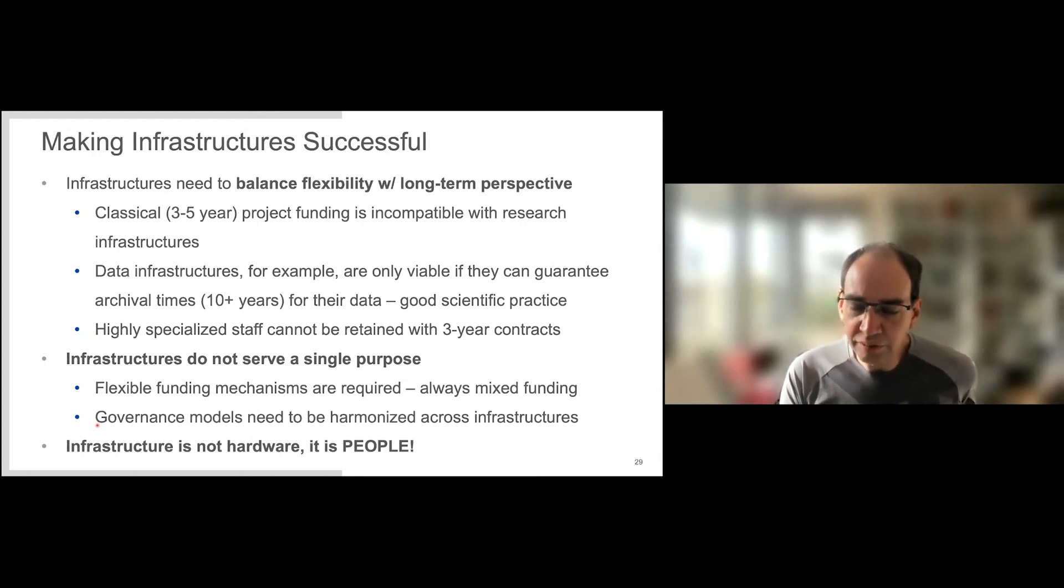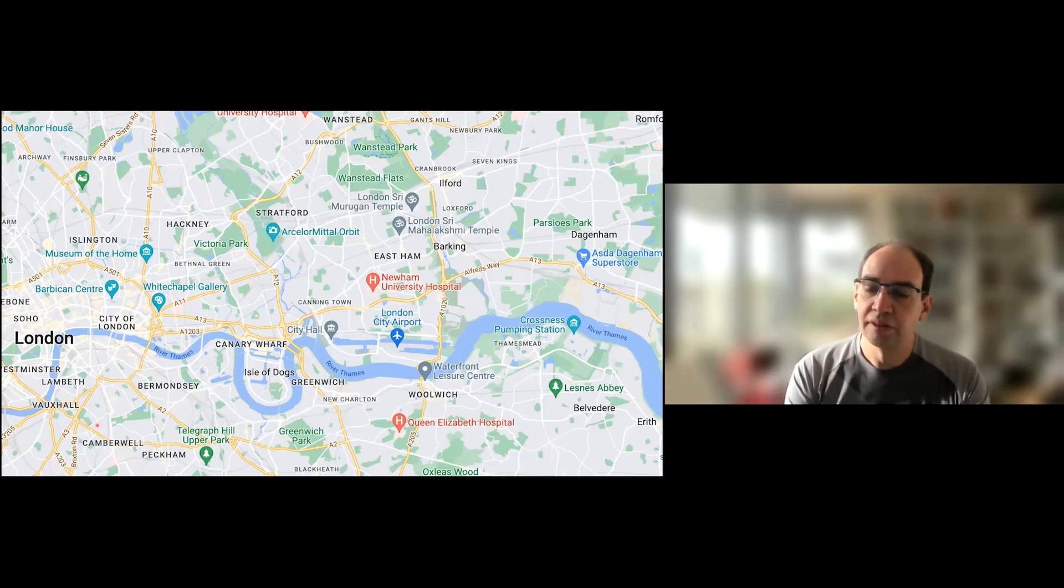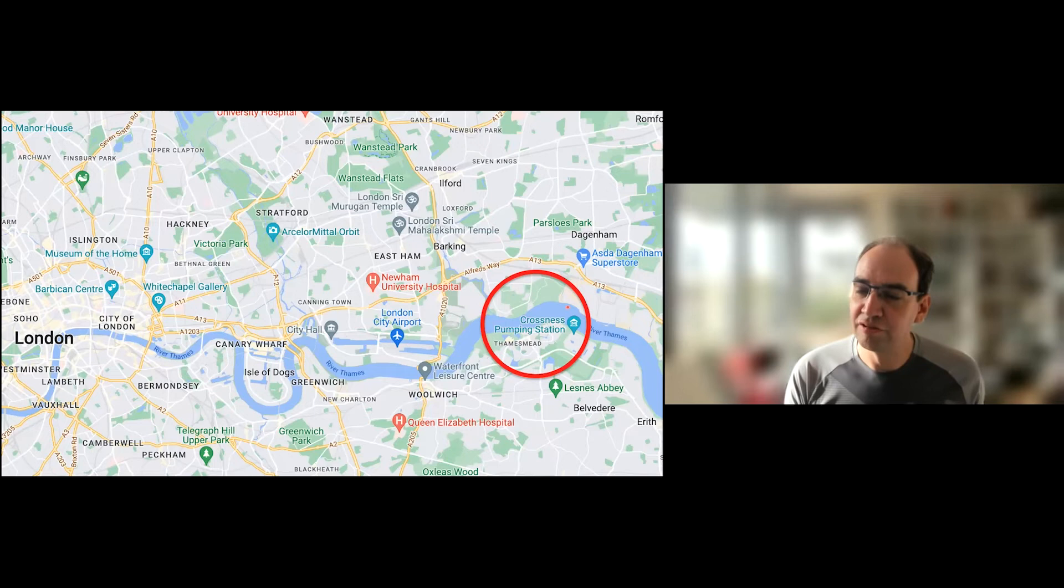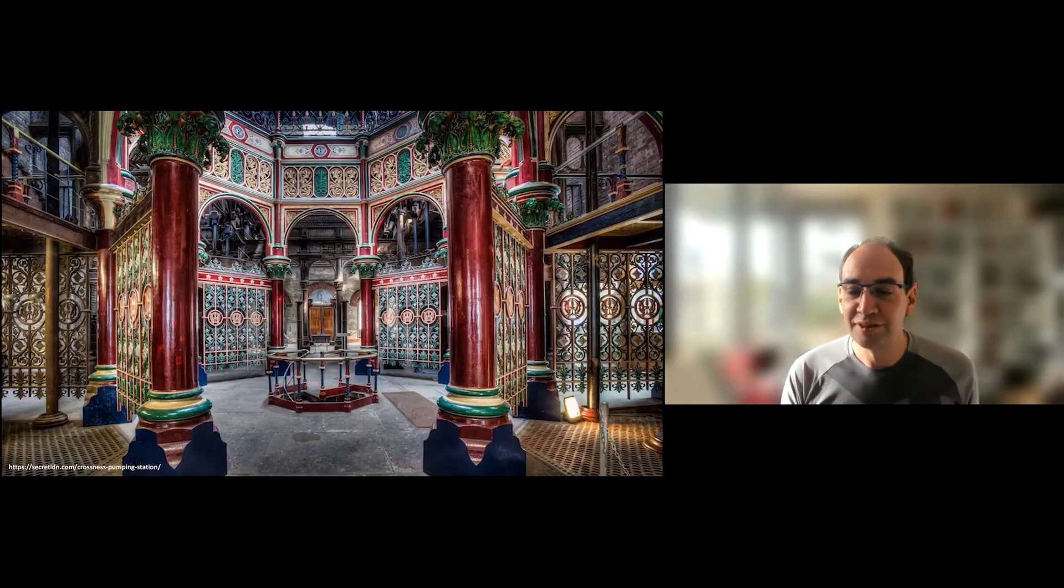Infrastructures do not serve a single purpose, so they need flexible funding mechanisms. Governance models need to be harmonized and funding models must account for that. But the most important lesson is that infrastructure is not hardware, it is people. We really need to appreciate the people that work on these things. If you've been to London, there's an interesting place: the Thames Crossness pumping station. That's infrastructure. I hope I could show you that infrastructures can be beautiful, and most of all, they're very necessary. Thank you.